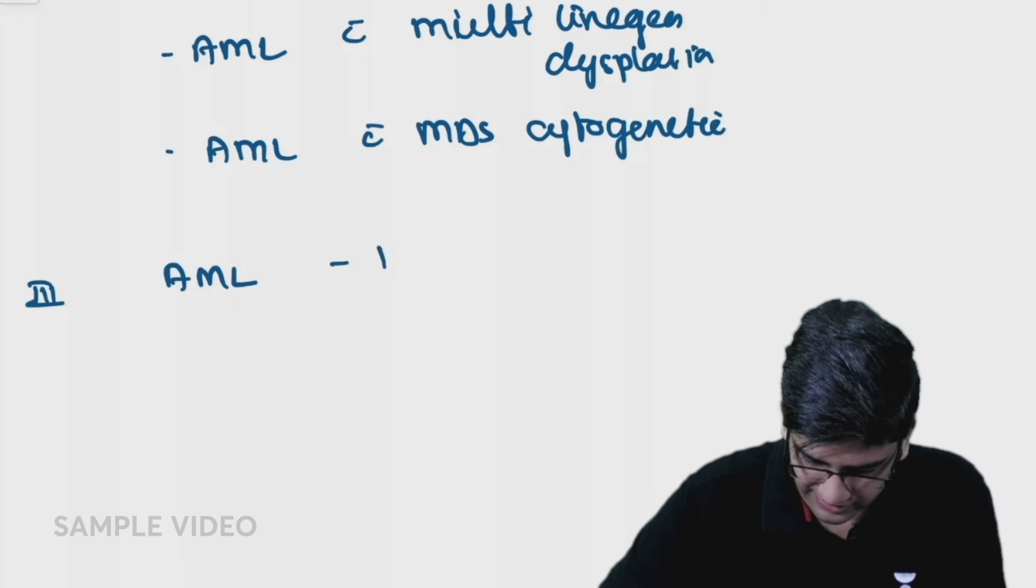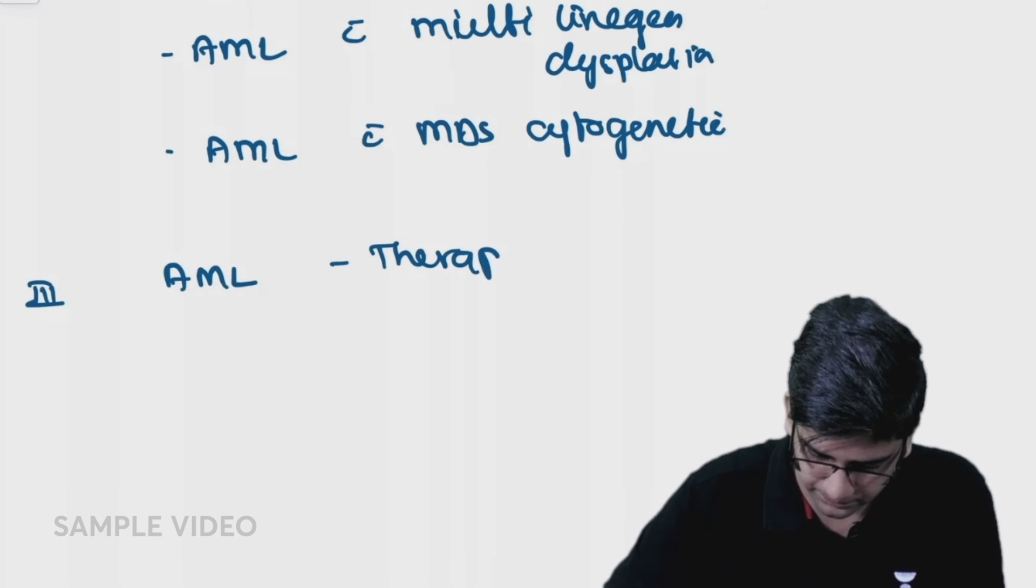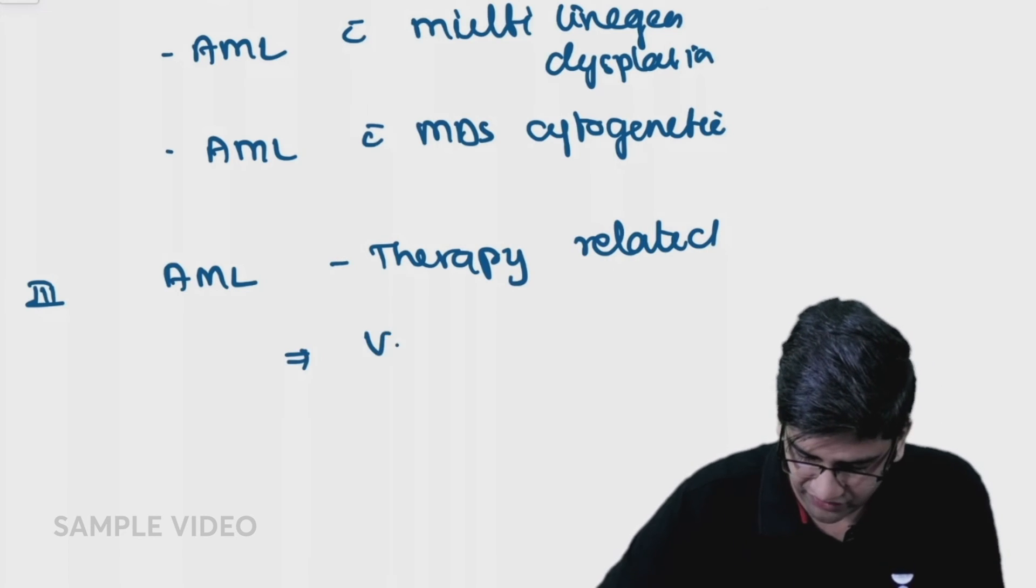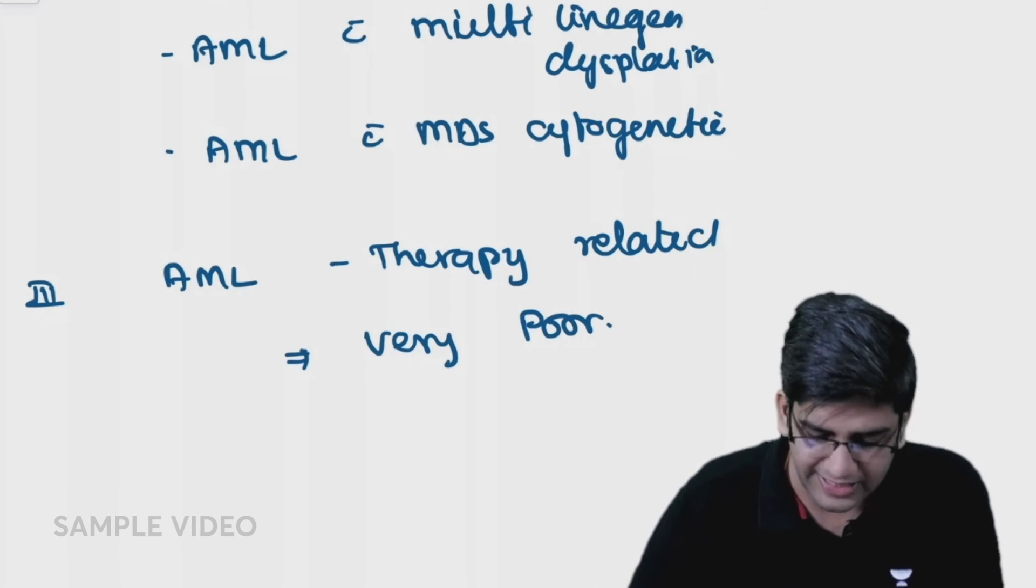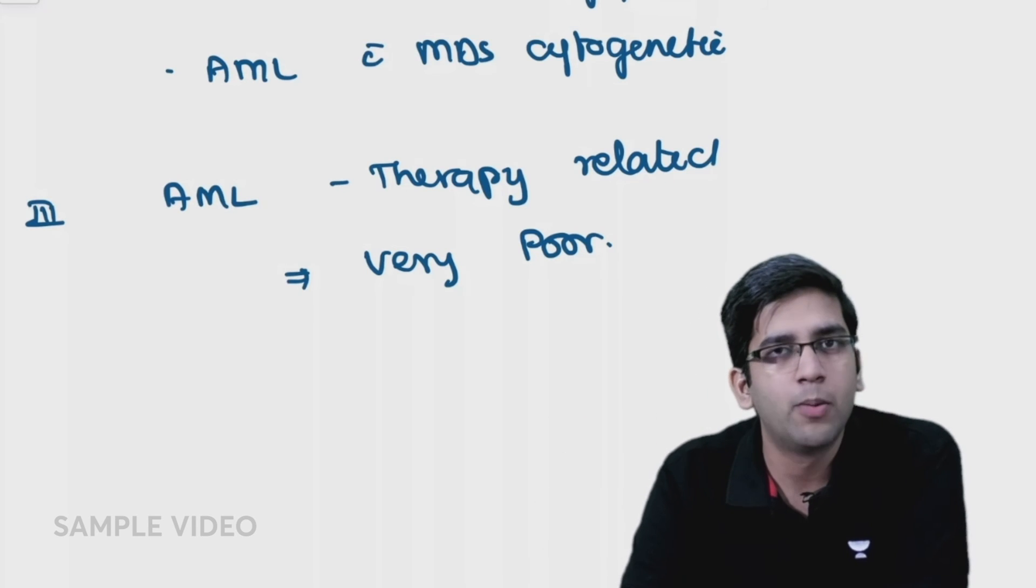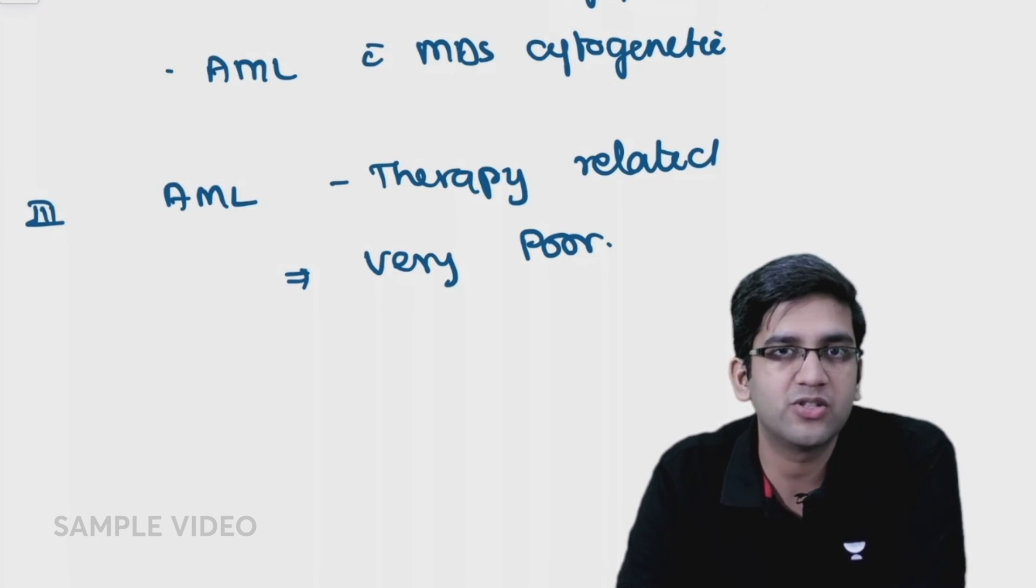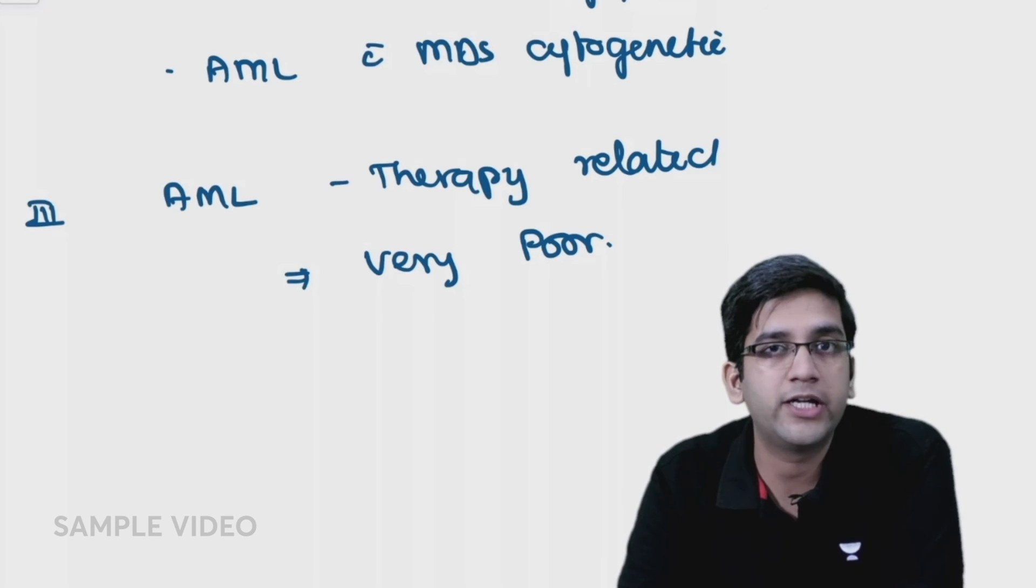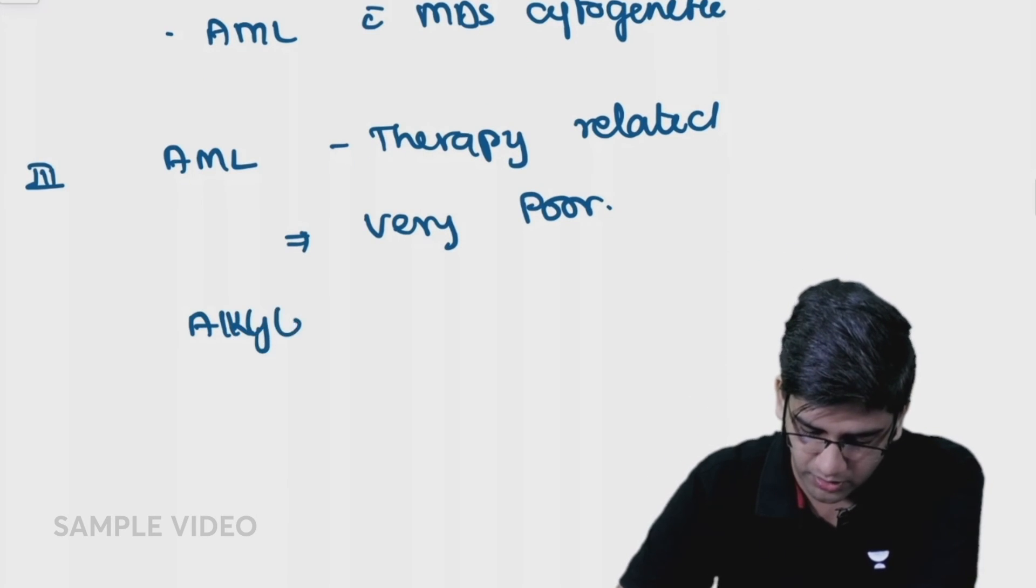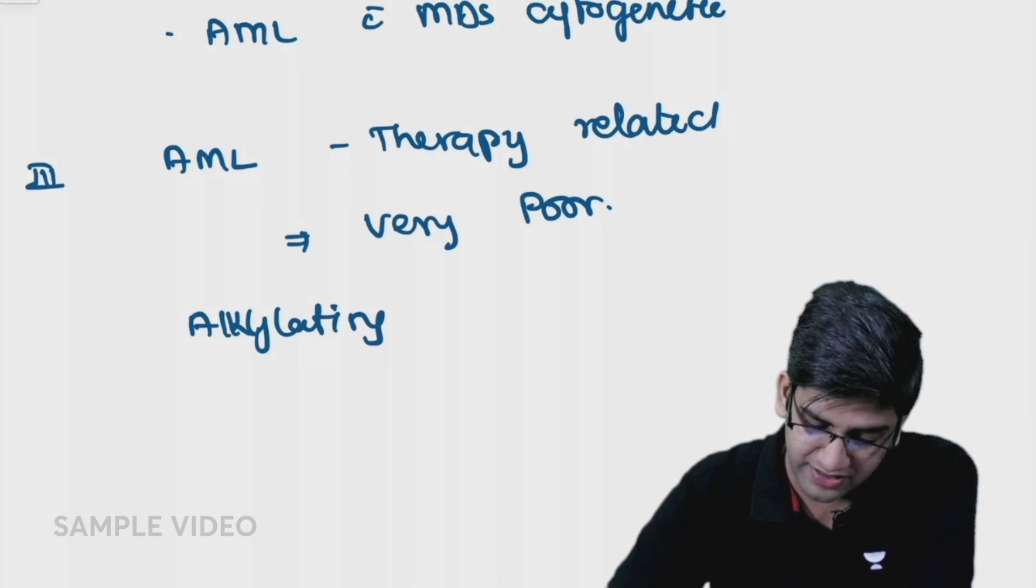The third group is therapy-related AML. Any therapy-related AML will have very poor prognosis. I'll tell you why this is important. When you read pharmacotherapy, alkylating agents are actually carcinogens - I'm using them because they are low-grade carcinogens. One side effect of topoisomerase inhibitors like etoposide is secondary leukemia.